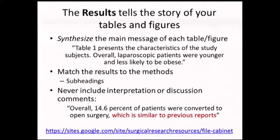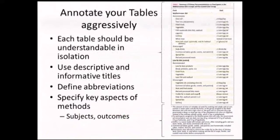The results section is basically telling a story — the story of your tables and figures. The easiest way to do that is just have one paragraph per exhibit: one table is an exhibit, one figure is an exhibit, and the paragraph just tells the story. You synthesize the main message; you don't repeat all the numbers that are in the table. You can say something like, 'Table one presents the characteristics of the study subjects.' Each result is matched to each method, and if you use subheadings you can sort of match those subheadings. There's no interpretation or discussion in the results — no value statements like 'this was high' or 'this was surprising.' It's just the facts, just the numbers, presented as clearly as you can.